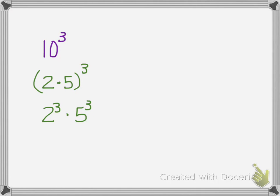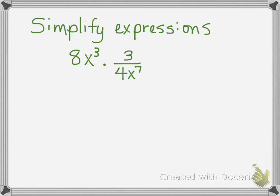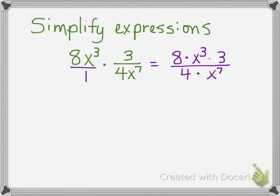Sometimes in algebra it works to just be able to go both ways with expressions like this — to be able to change the base. These are both examples of changing the base in an exponential expression. Another thing we haven't had a lot of practice with in the problem sets is simplifying expressions like the one shown here. The first thing we want to recognize is that these are just fractions. I can write 8x to the third over 1, multiply the fractions across, and I've thought of this as 8 times x to the third times 3, and this is 1 times 4 times x to the seventh.